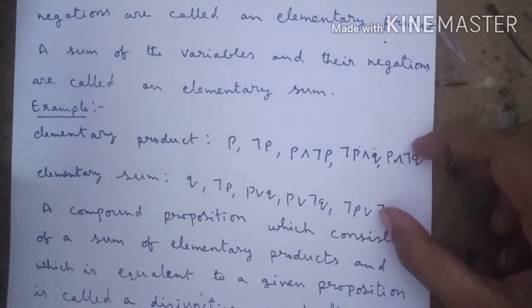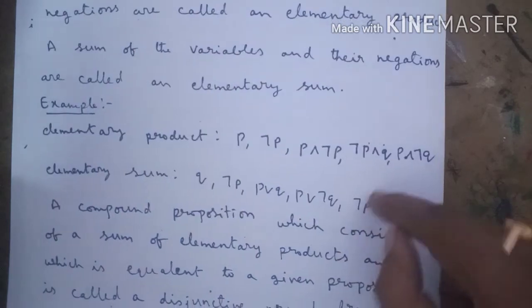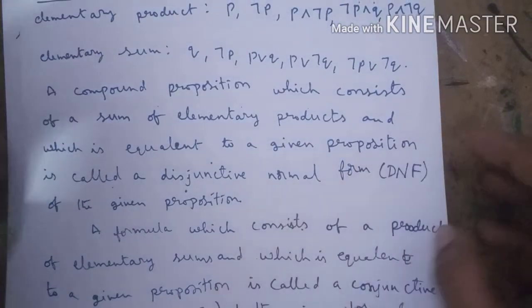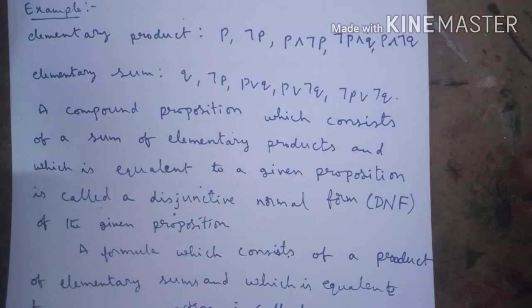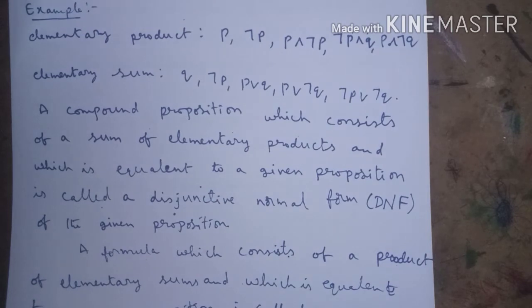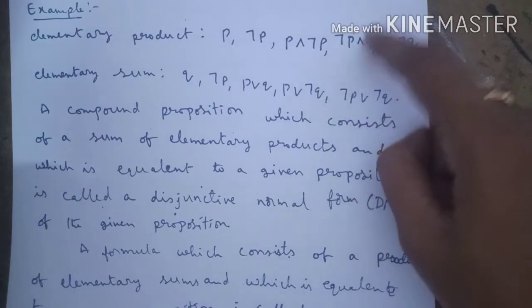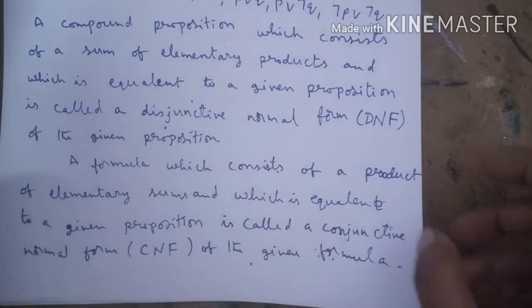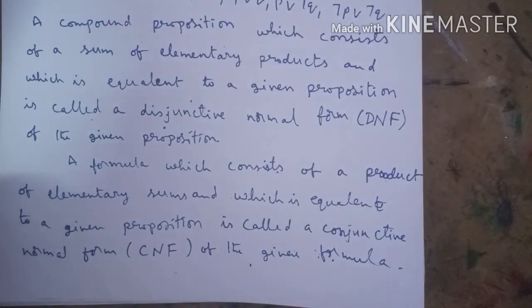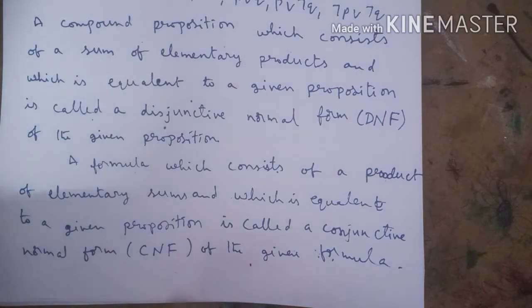Now, a compound proposition which consists of a sum of elementary products, and which is equivalent to the given proposition, is called Disjunctive Normal Form (DNF). In the same way, a formula which consists of a product of elementary sums, and which is equivalent to the given proposition, is called Conjunctive Normal Form (CNF).